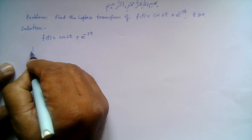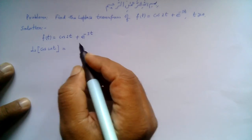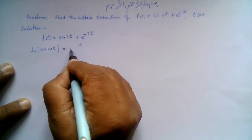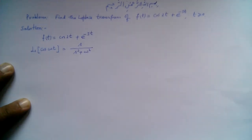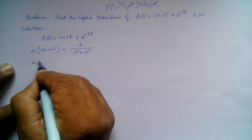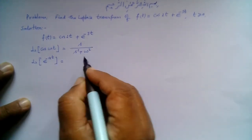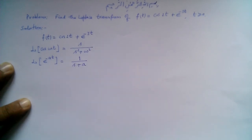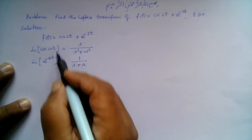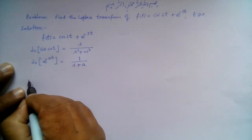We know that the Laplace transform of cos(ωt) is given by s over (s² + ω²), and the Laplace transform of e^(-at) is given by 1 over (s + a). Using these standard results, we can find the Laplace transform of f(t) via the linearity property.